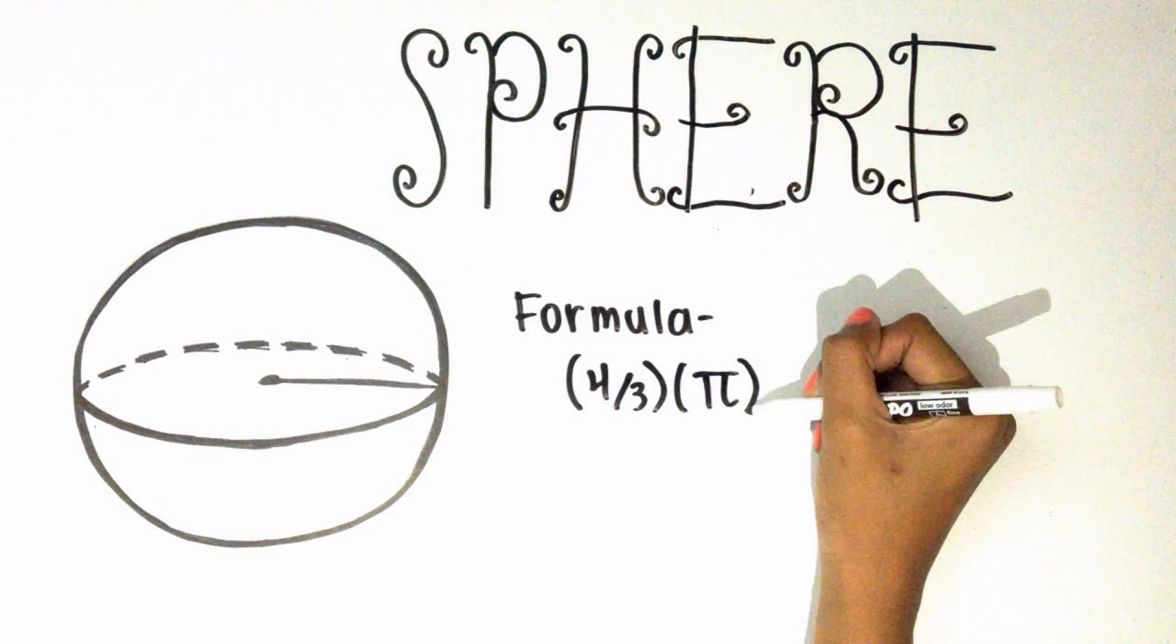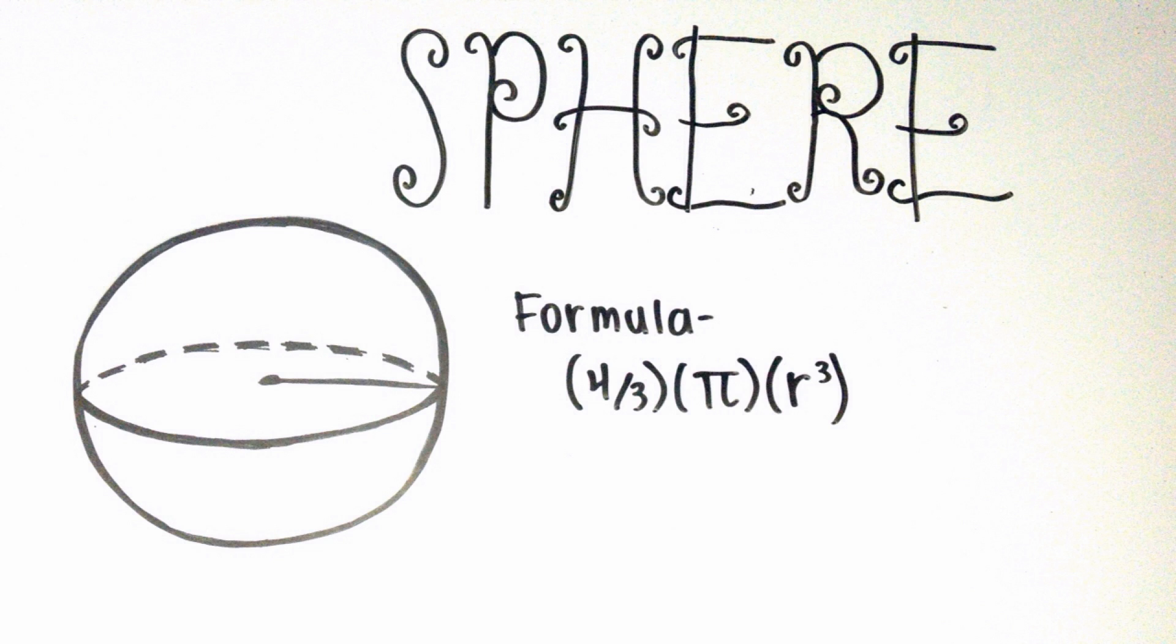Finally, the sphere: four thirds times pi times radius cubed. Pi relates to the circle, radius cubed relates to the 3D object, and four thirds was discovered by mathematicians many years ago.